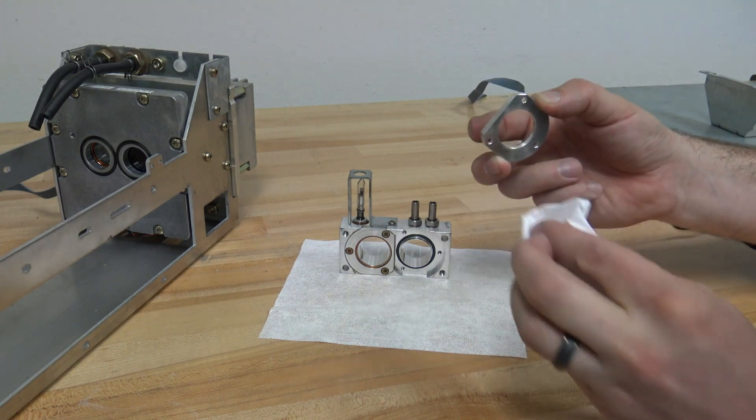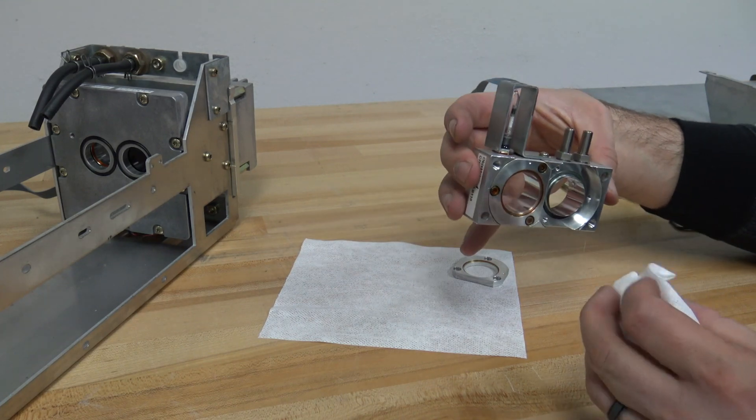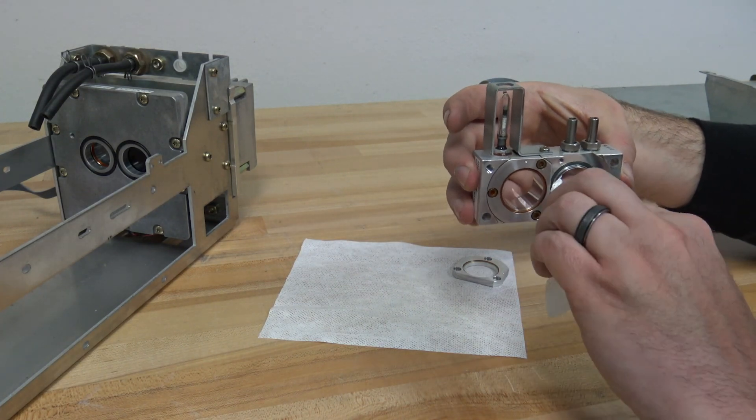Reassemble in reverse order. When installing the sample chamber glass, tighten screws uniformly. The glass could break under mechanical stress.